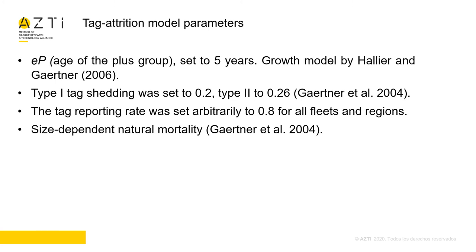Regarding the parameters used for this model, they were the same as defined in previous works by Jean-Pierre Allier and by Daniel, regarding growth, age groups, tag shedding, and natural mortality. Regarding the reporting rate, we set an arbitrary value of 0.9 for all regions and fleets.